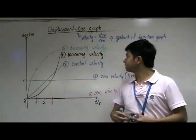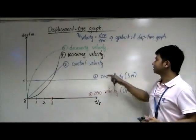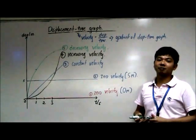And these five graphs actually sum up the different kinds of displacement-time graph.